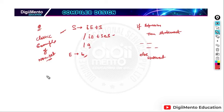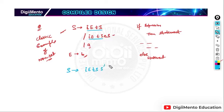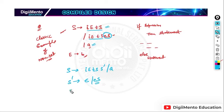Let us use left factoring to convert it into deterministic grammar. We take the common part I E T S, so we write S → I E T S' | A, and S' → E S | epsilon. We have written the else part as E S and the case without else as epsilon. E → B remains. Now this grammar is deterministic because we have removed the common prefixes from the productions.